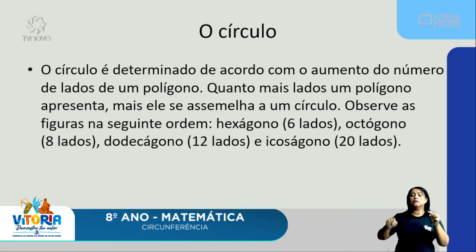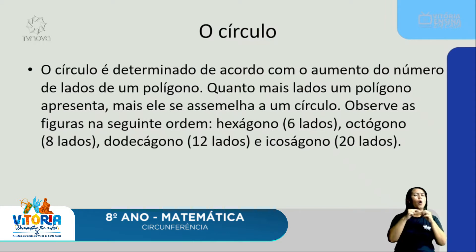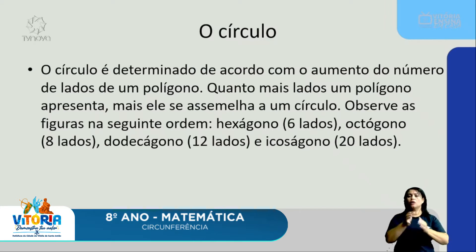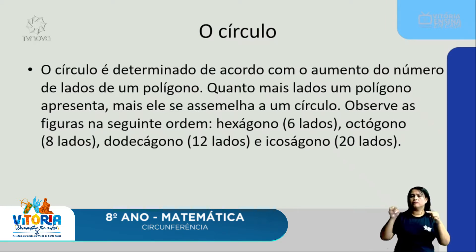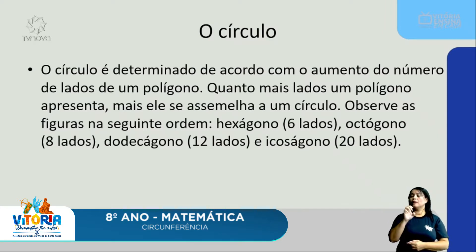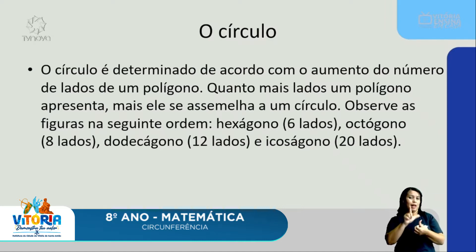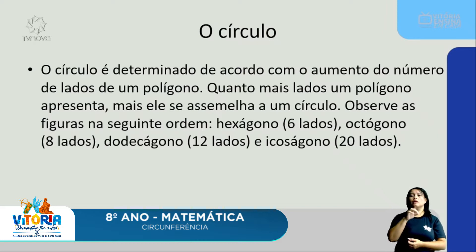O círculo é determinado de acordo com o aumento do número de lados de um polígono. Quanto mais lados um polígono apresenta, mais ele se assemelha a um círculo. Observe as figuras da seguinte ordem: um hexágono tem seis lados, um octógono tem oito lados, um dodecógono tem doze lados e um icosógono tem vinte lados.